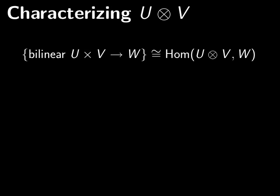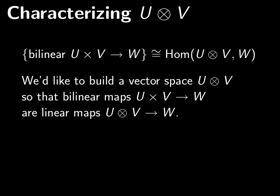So now what's the tensor product of U and V? We write that with a multiplication symbol in a circle, U tensor V. Well, U tensor V is a vector space so that bilinear maps from U and V to W are the same thing as linear maps from U tensor V into W. So U tensor V is a brand new vector space. And trying to find what that vector space is is a little bit problematic.